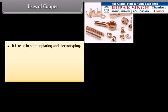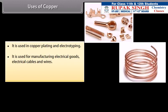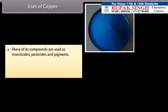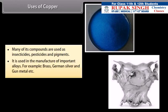Uses of copper. It is used in copper plating and electrotyping. It is used for manufacturing electrical goods, electrical cables and wires. It is used for making vacuum pans, heating utensils and calorimeter. Many of its compounds are used as insecticides, pesticides and pigments. It is used in the manufacture of important alloys. For example, brass, german silver and gunmetal etc.